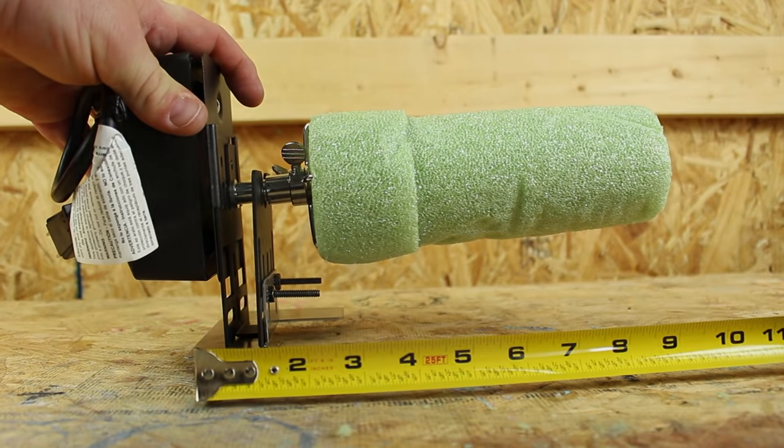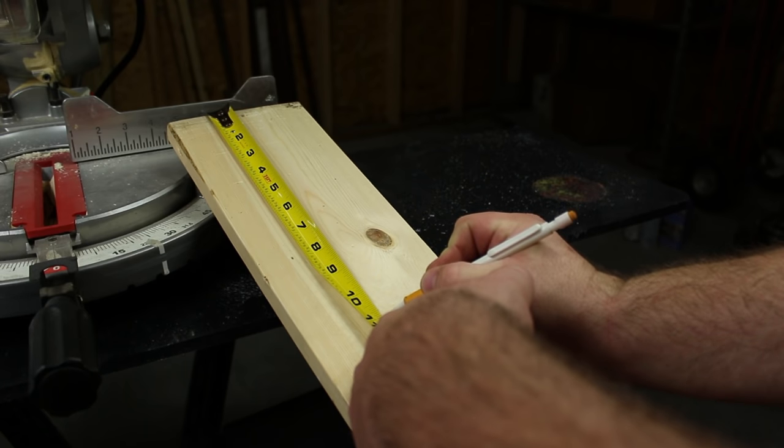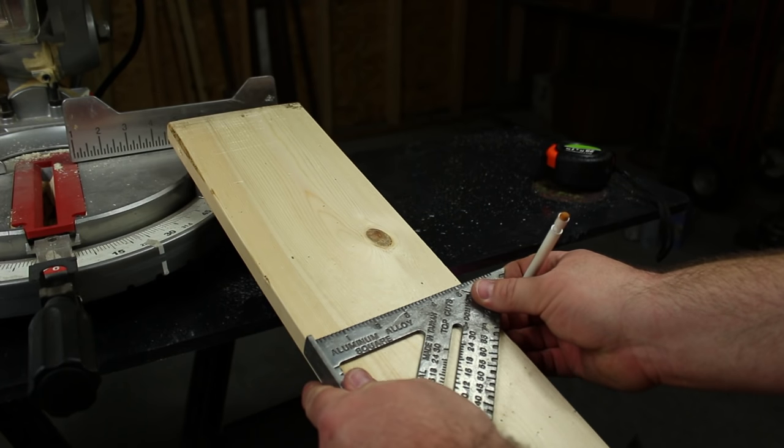So I went over and got a piece of one by six. So it's three quarters inches thick, five and a half inches wide, marked it 10 and a half, 11 inches. And I cut it.